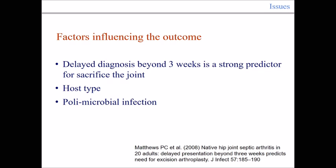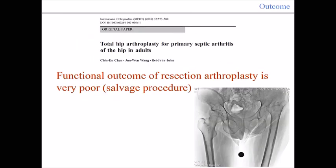Factors influencing the outcome of acute joint infection include: delayed diagnosis beyond three weeks, which is a strong predictor for sacrificing the joint — so immediate diagnosis is very important when infection is suspected. The host type also matters, as does any polymicrobial infection. This is typically a hematogenous infection, but we now see more cases related to intra-articular injections with hyaluronic acid, which may be increasing the number of infections.